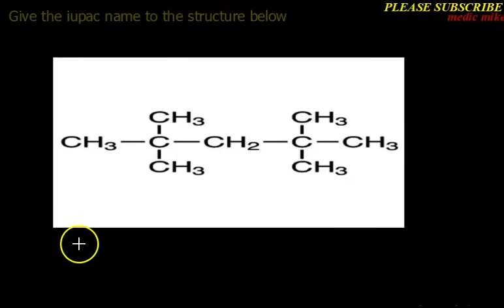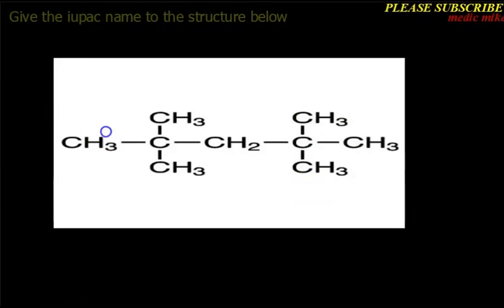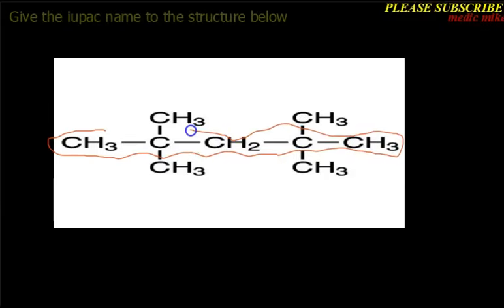Now we have another example. We are asked to give the IUPAC name for the structure. Remember rule number one: look for the longest continuous chain. The longest continuous chain does not have to be straight — it can be branched — as long as it is the longest and the chain is continuous. Here, the longest continuous chain is five carbon atoms, which is pent-, giving us pentane since it is a single-bond alkane.